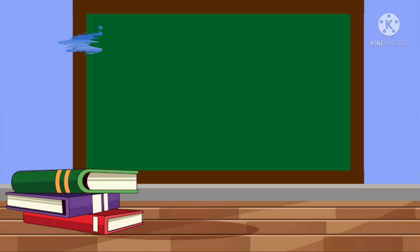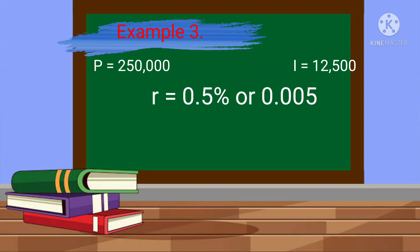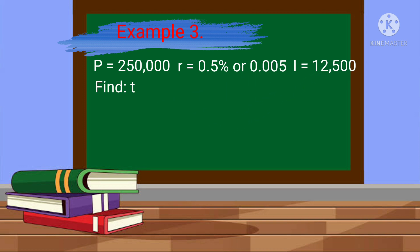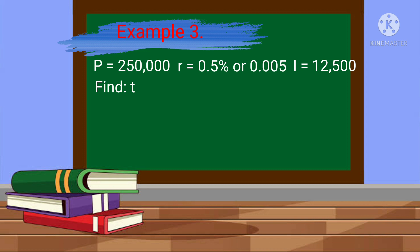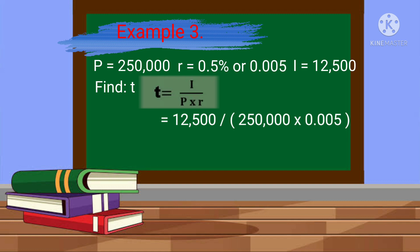Example number 3: Given principal = 250,000; rate = 0.5%; simple interest = 12,500. Find the time. Using the formula T = I ÷ (P × R): T = 12,500 ÷ (250,000 × 0.005), and the answer is 10 years.